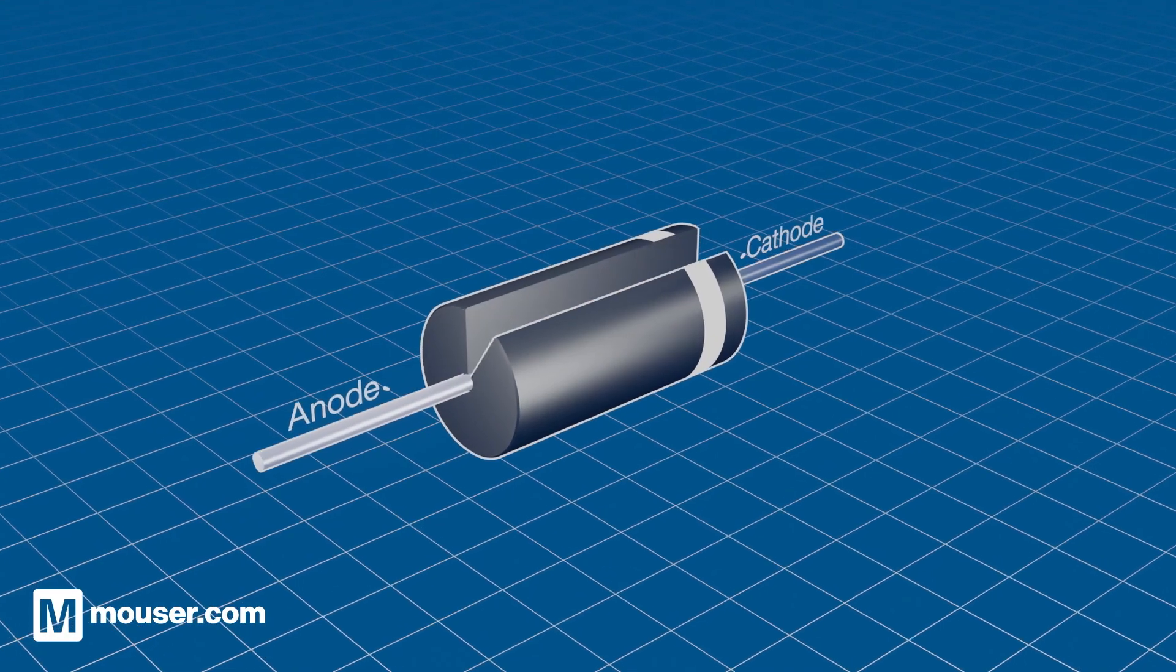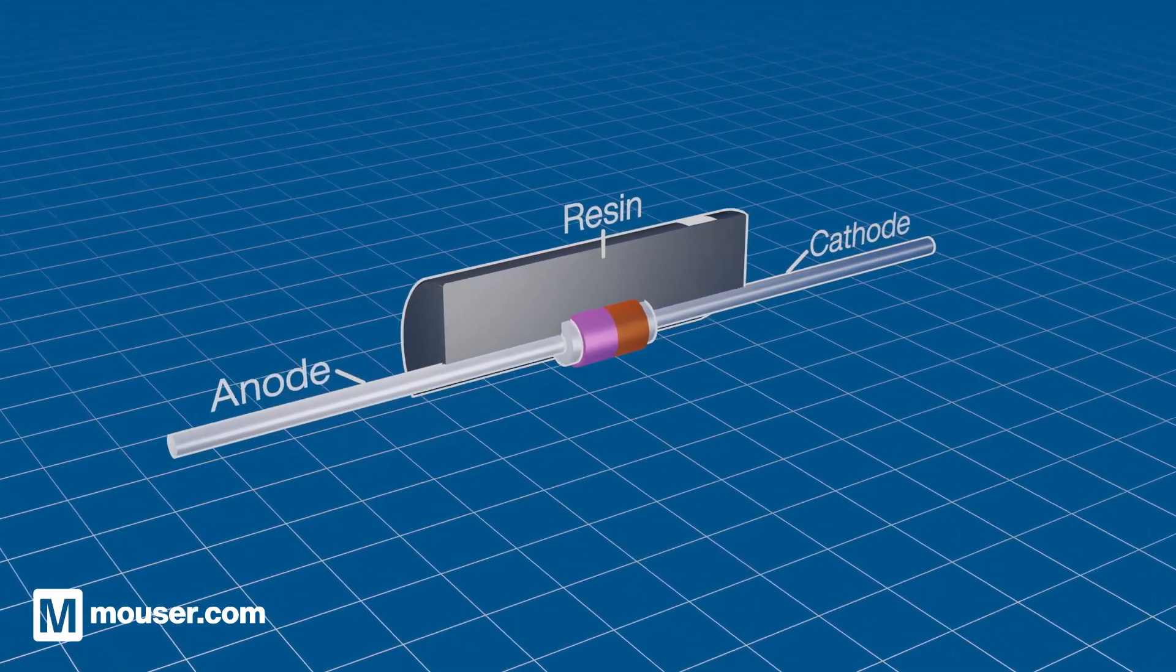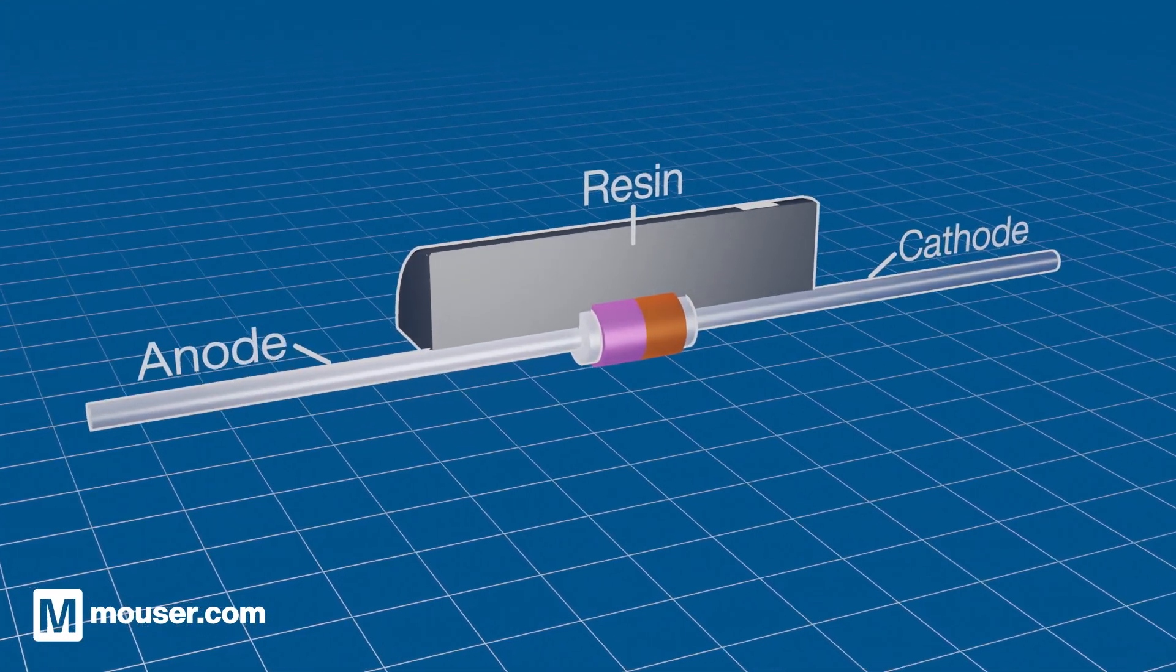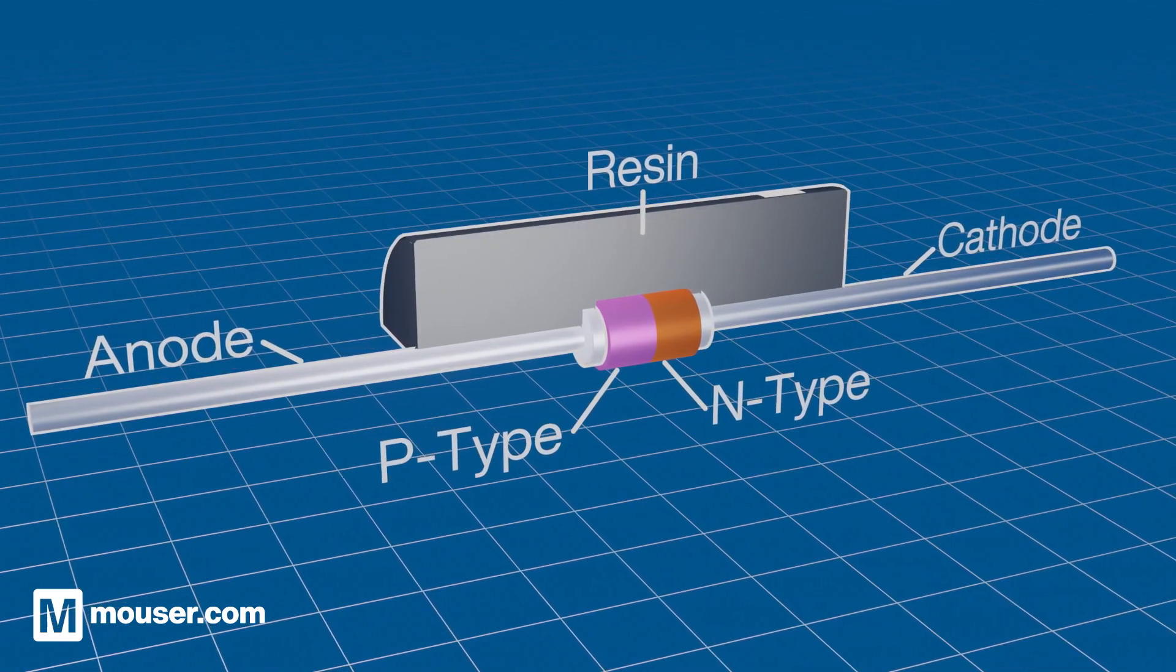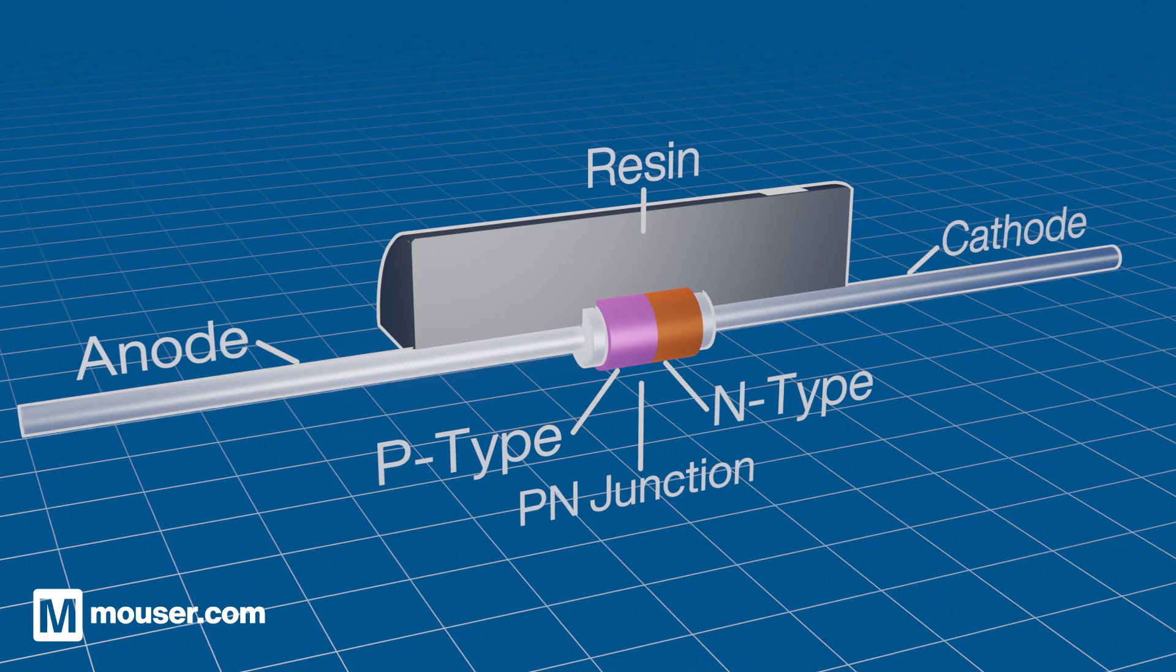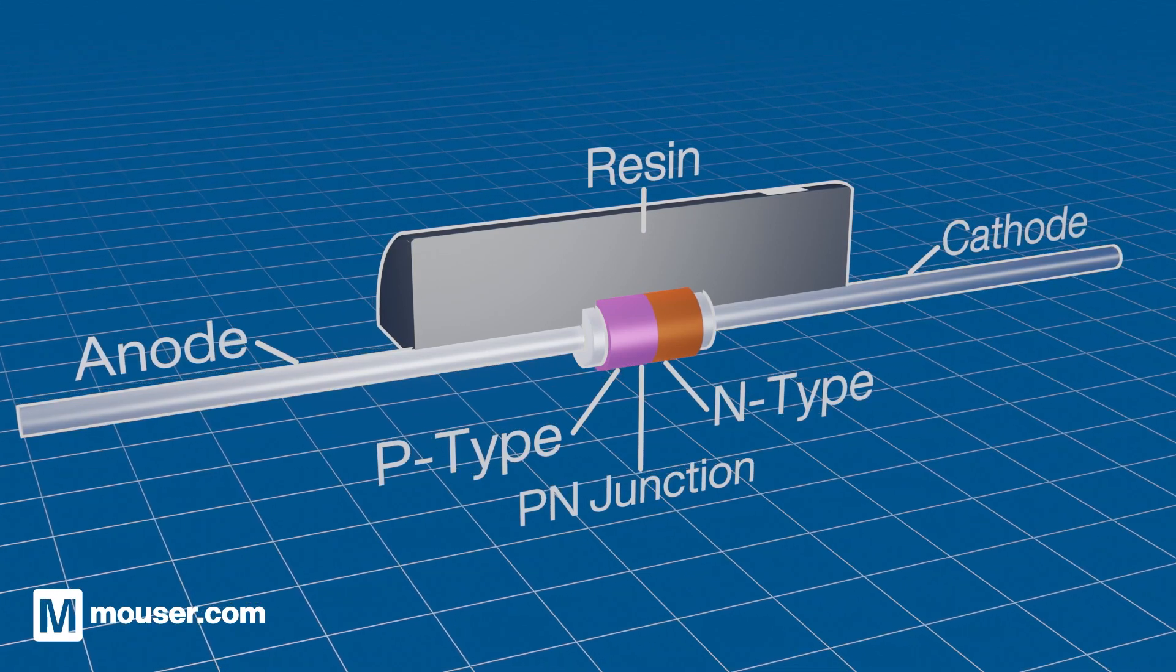Diodes are two terminal semiconductor devices. Combining two types of semiconductor material together, P-type and N-type, makes a diode. Known as the P-N junction, this allows electrical current to flow only in one direction.